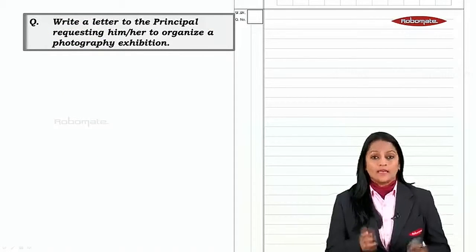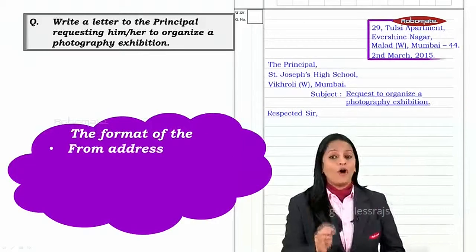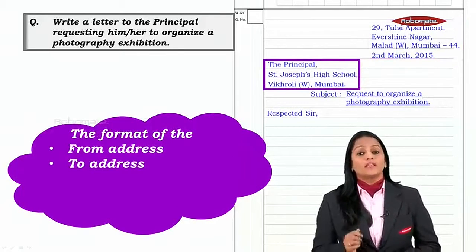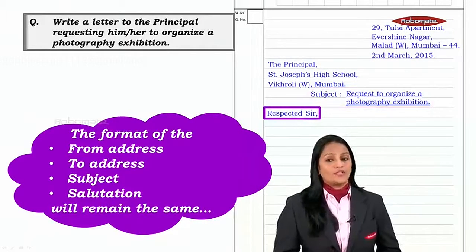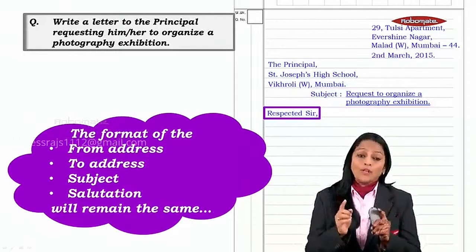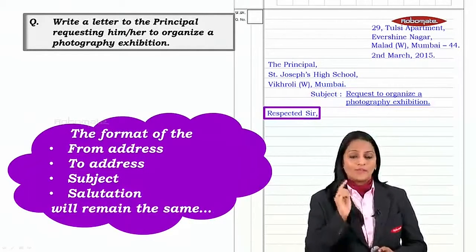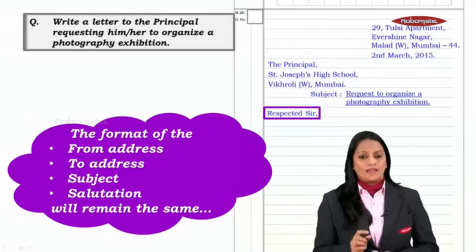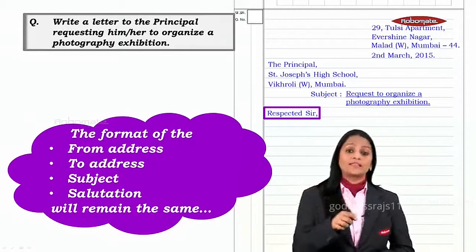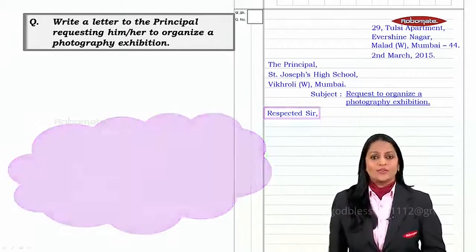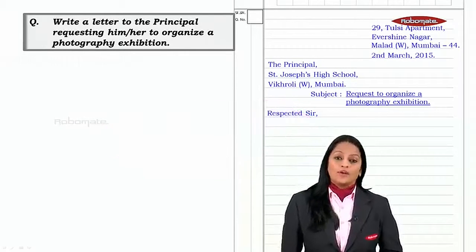So that's your request letter. This is the sample of the answer sheet. The format — from address, to address, subject, and salutation — will remain the same. What we are looking at is how to develop the paragraphs, especially the second paragraph. The first paragraph will also be a little different because that was a complaint letter and this is a request letter.